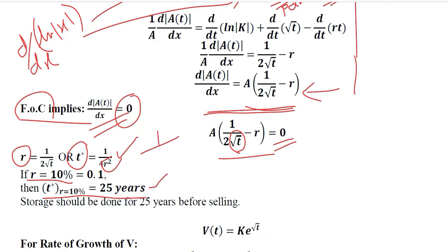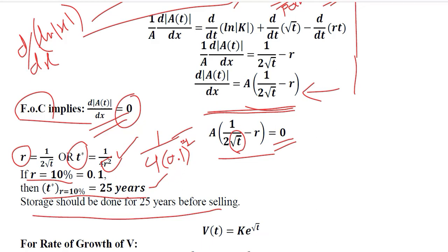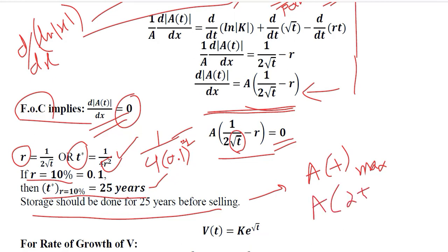For example, if r equals 10%, we put 0.1 into the formula. Since there is a square involved, solving gives us 25. So 25 years is the suitable time to keep the wine stored so that its present value is maximized, that is t equals 25.